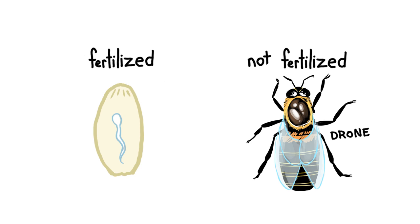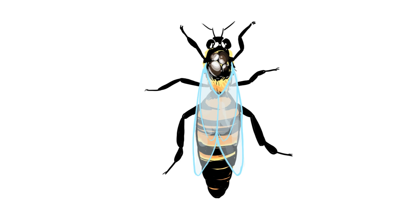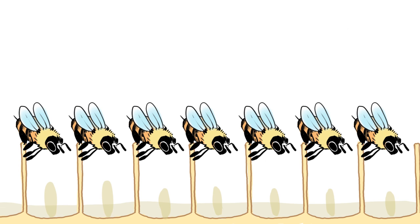If sperm is introduced, the fertilized egg will become a female. This is a diploid egg because it has two sets of chromosomes. A diploid egg can go on to become either a worker bee or a queen, depending on what it is fed. A queen doesn't feed her own offspring — she just lays eggs; workers handle all the feeding in the hive, including feeding the queen.